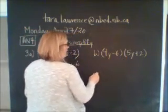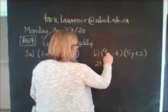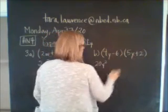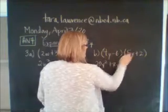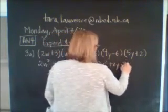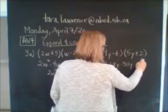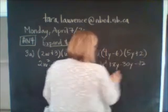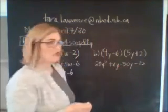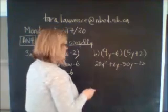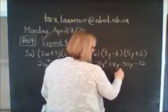4y times 5y is 20y squared; 4y times 2 is 8y; negative 6 times 5y is negative 30y; and negative 6 times 2 is negative 12. Collect up those two middle terms — that's usually the two middle terms — and 8 subtract 30 is negative 22y. So the answer is 20y squared minus 22y minus 12.